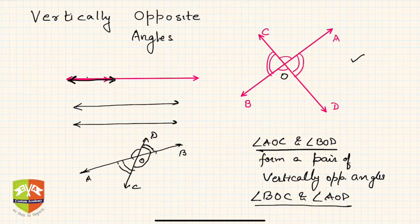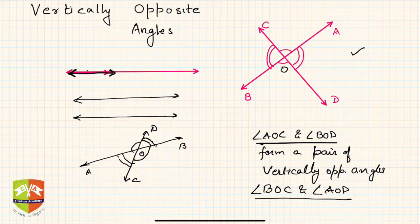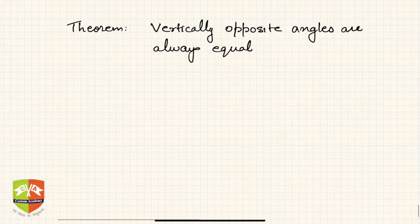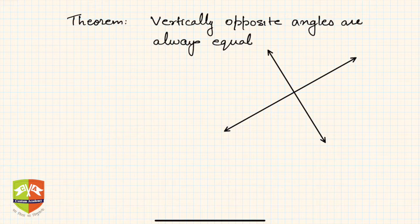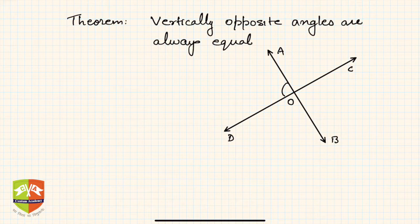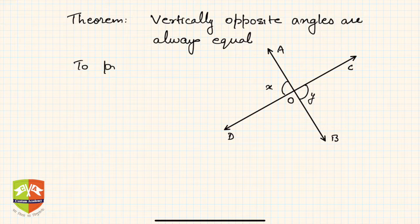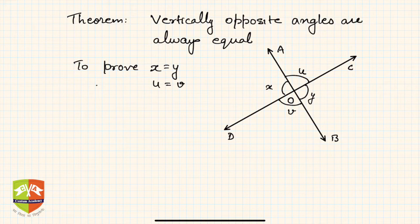Please understand this concept because now we are going to prove that vertically opposite angles are always equal. We have drawn two intersecting lines AB and CD intersecting at point O. We have to prove that angle AOD equals x, angle BOC equals y, and x equals y. Similarly, if angle AOC is u and angle BOD is v, then u also equals v.